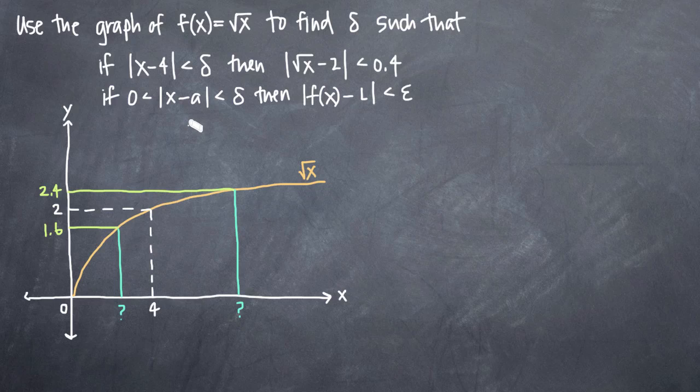And you may notice that this problem is strongly related to the precise definition of the limit, or the epsilon delta definition of the limit, which I've written here for reference, which says that if 0 is less than the absolute value of x minus a, which is also less than delta, then the absolute value of f(x) minus l is less than epsilon.